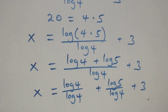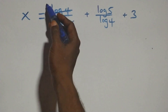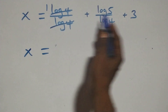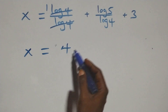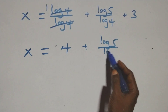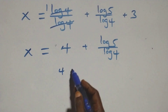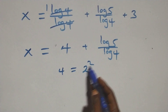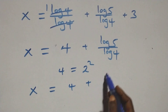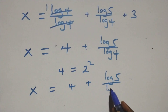At this, here we have log 4 cancelled each other. So here, we have x equals to 1 plus log 5 over log 4 plus 3. Also, here we can express 4 as 2 times 2, that is 2 squared. At this, we have x equals to log 5 over log of 2 squared.